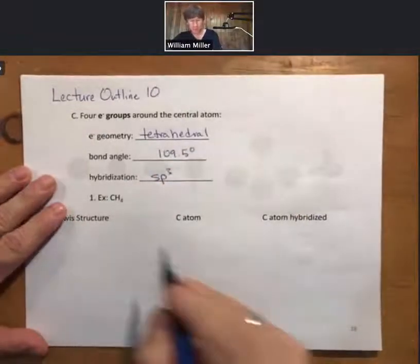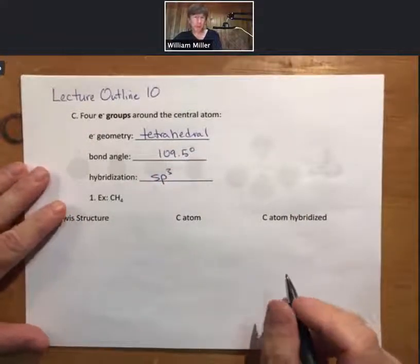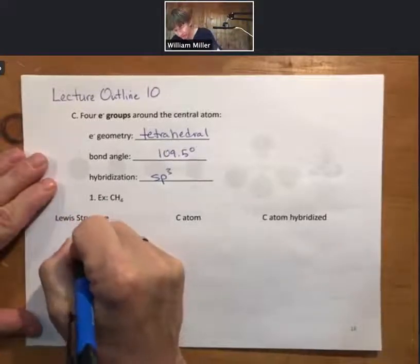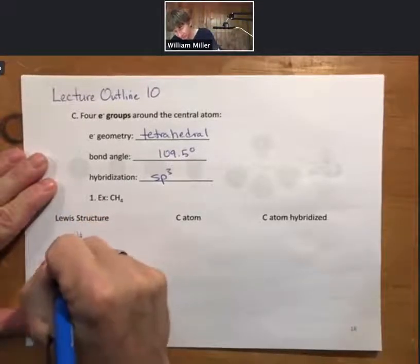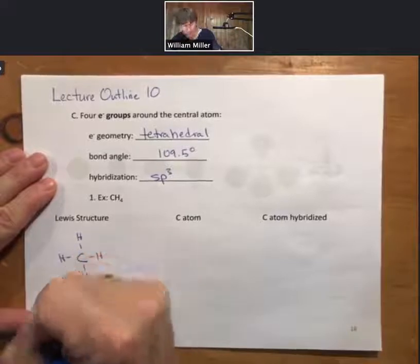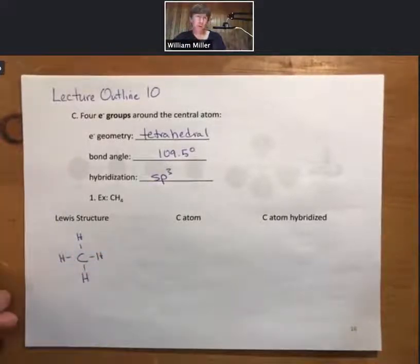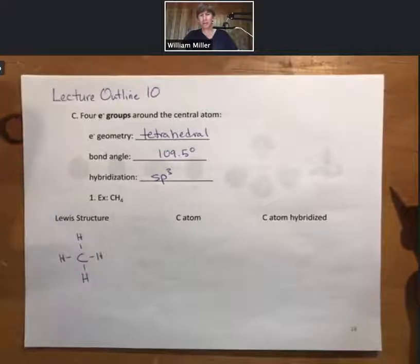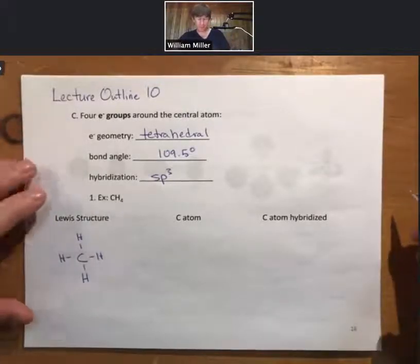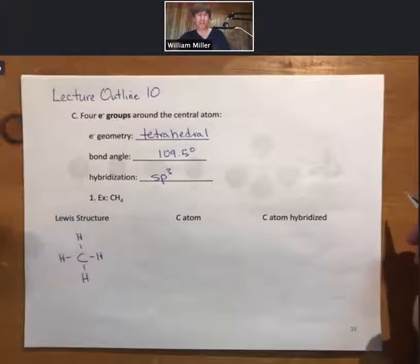An example is CH4, methane. We'll draw the Lewis structure first. Lewis structures do not have to show shape, though they can. What Lewis structures have to show is all of the bonds, all of the atoms, and all of the lone or non-bonding pairs of electrons — of which there are no lone pairs in CH4.